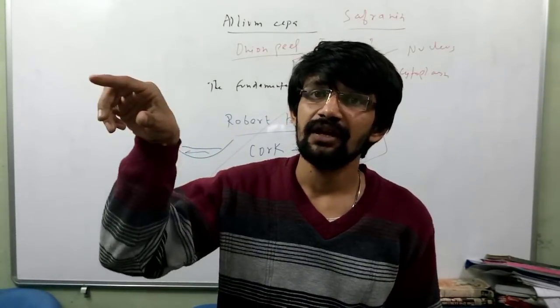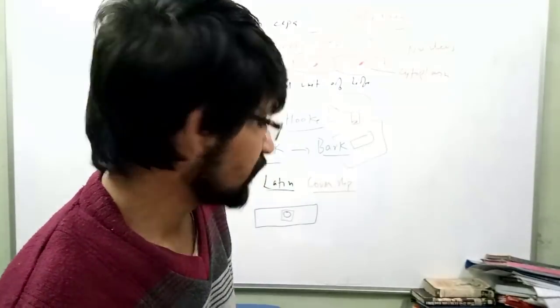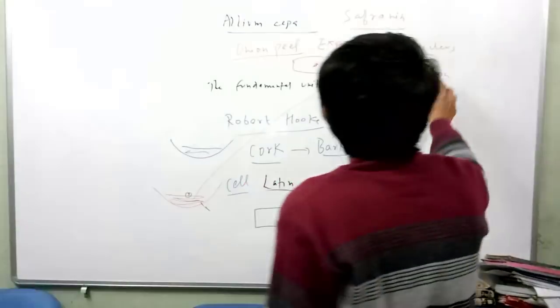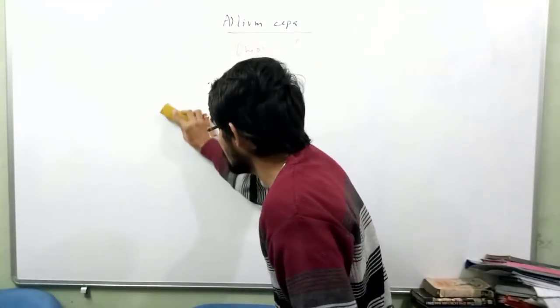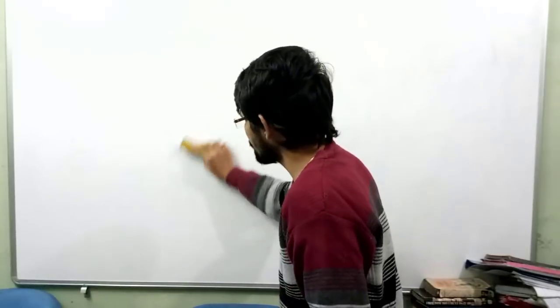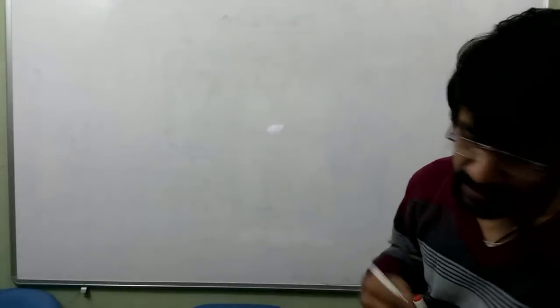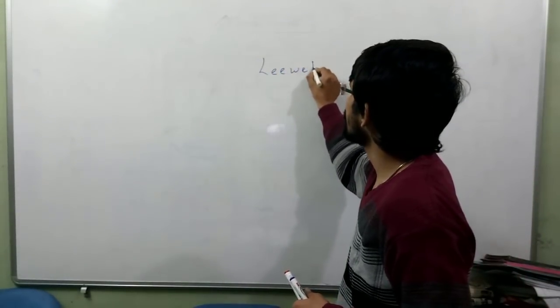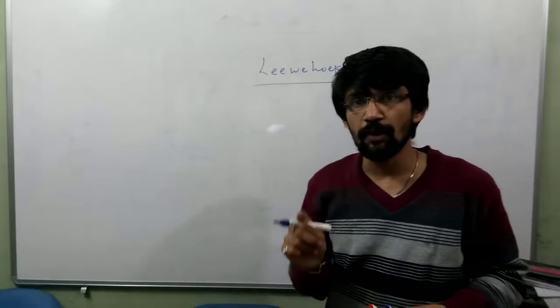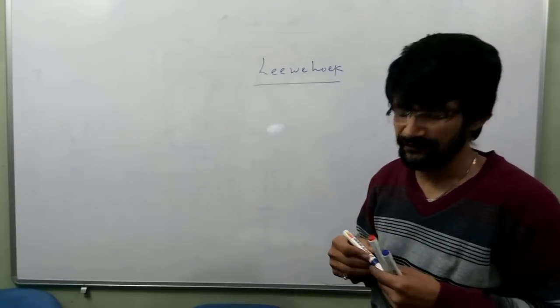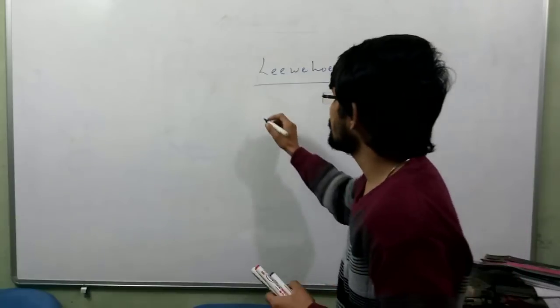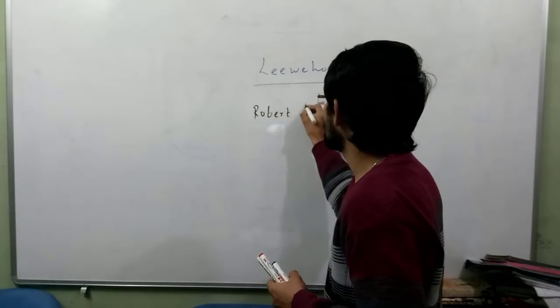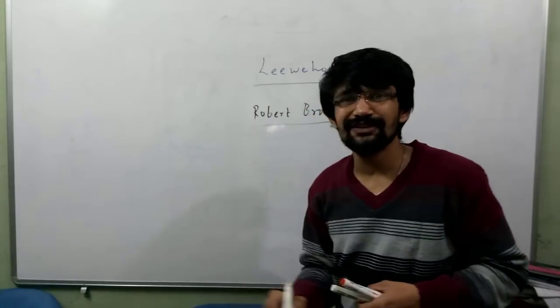The very important thing from the point of view of various examinations — NTSE, SSC examination — is the names of the various scientists. There was a very famous scientist, Leeuwenhoek. Keep this in mind: the cell was discovered by Robert Hooke, but the first living cell was discovered by Leeuwenhoek. He plays a very vital role in the discovery of the cell. Then there was another scientist called Robert Brown, who discovered the nucleus inside the cell.